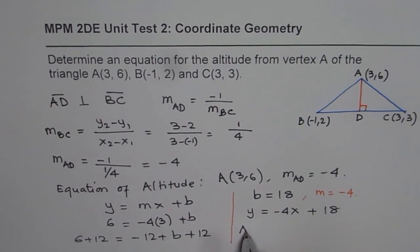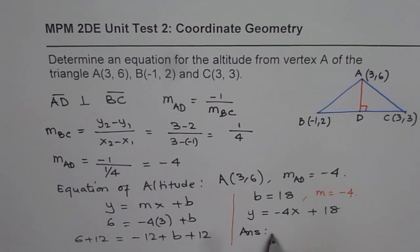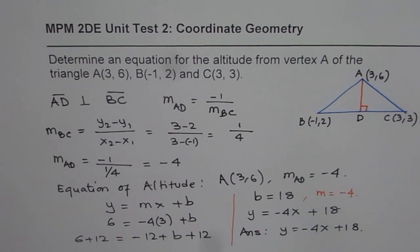So the answer is: equation of the altitude is y = -4x + 18.